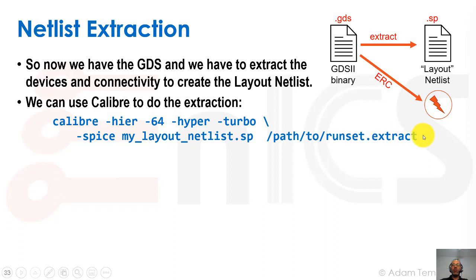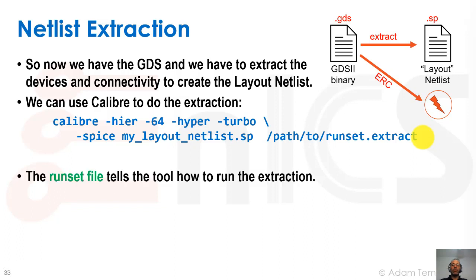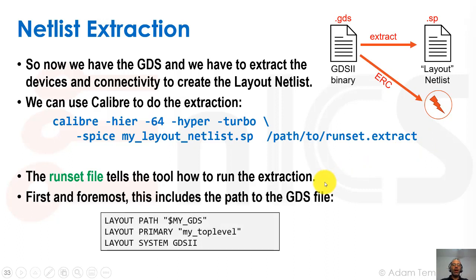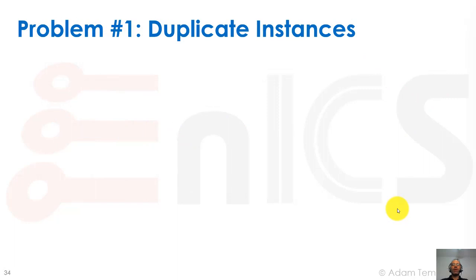What is a run set? It's something in the SVRF language with many commands. The run set usually calls the rule file, which is provided by our foundry and tells Calibre how to identify different layers, connectivity, and devices. The run set is a wrapper that gives it information we can tweak and configure. Inside the run set file, first and foremost, it must tell us where the GDS file is using layout path, layout primary, and layout system commands. The layout primary is the top-level inside our GDS, and the system GDS — it can also take Oasis files, but GDS is the industry standard.